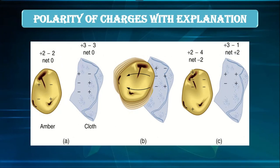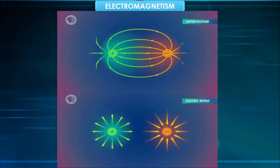Coming to polarity of charge — the phenomenon of static electricity requires a separation of positive and negative charges. When two materials are in contact, electrons may move from one material to the other, leaving an excess of positive charge on one and an equal negative charge on the other. When two objects charged by rubbing are brought closer, their charges get neutralized. The charges were named negative and positive by American scientist Benjamin Franklin. If an object possesses electric charge it is said to be electrified or charged; when it has no charge it is said to be neutral.